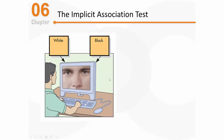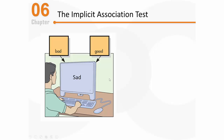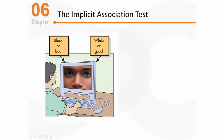When a white face appears, the person pushes down on the button with their left hand as quickly as they can. In another stage of the experiment, people see words — some generally bad and some generally good. 'Happy' is a good word, so the person would respond with their right hand. 'Sad' is a bad word, so the person would respond with their left hand.